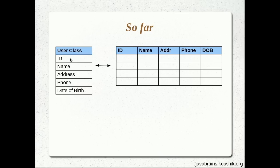They're primitives. ID is an integer, name is a string, address is a string, phone number is a string, date of birth is a single date. So each one of them can be represented as individual columns, which is fine.